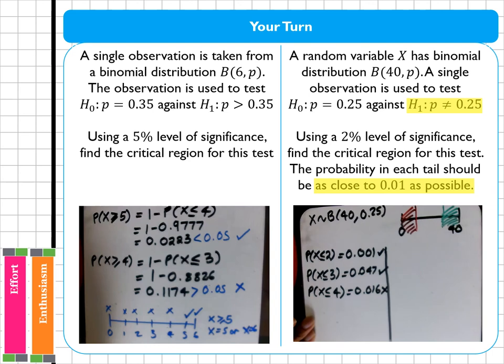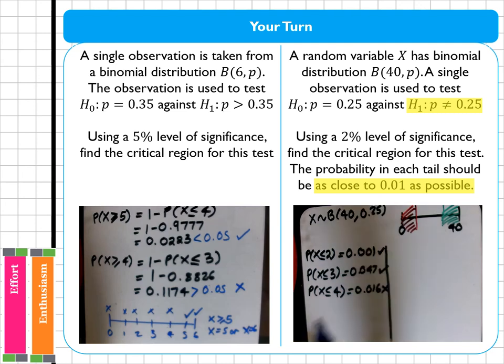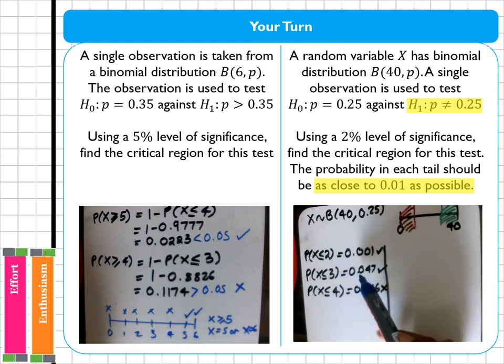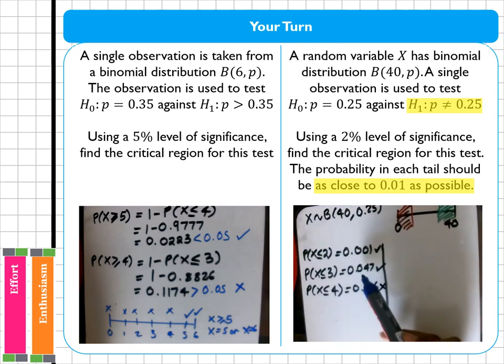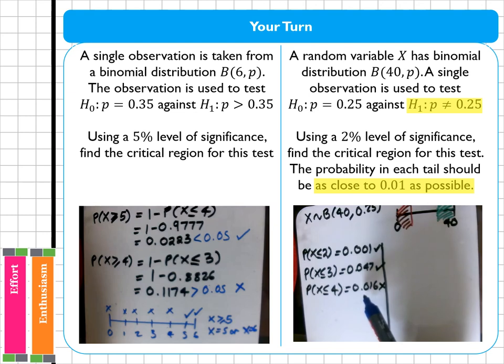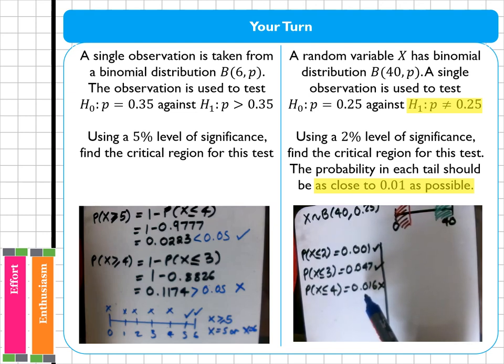Now usually at this point we would stop and just say it's less than or equal to three, but that sentence that says as close to 0.01 means we actually need to stop and have a think about whether 0.016 is closest to 0.01 or 0.043 is. In this case I know that this is 0.053 away from where I want to be. This is 0.006 away from where I want to be.